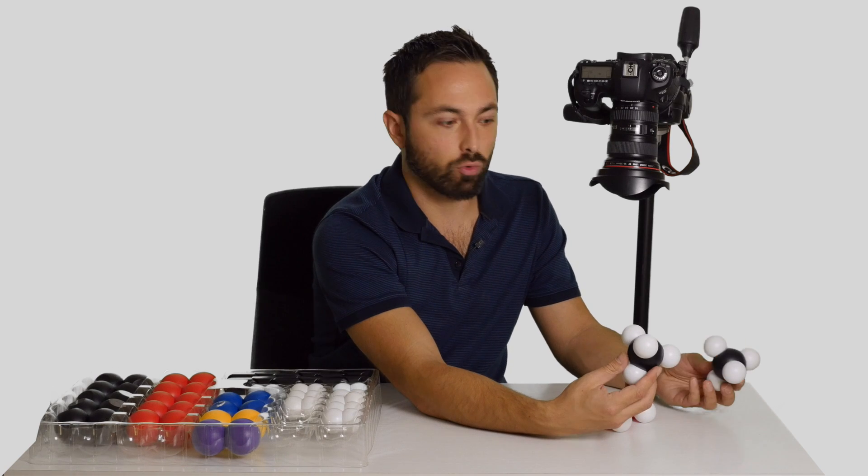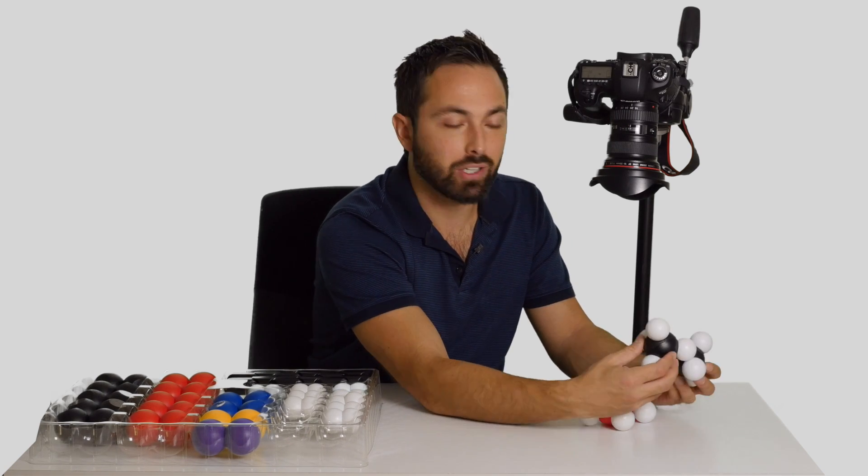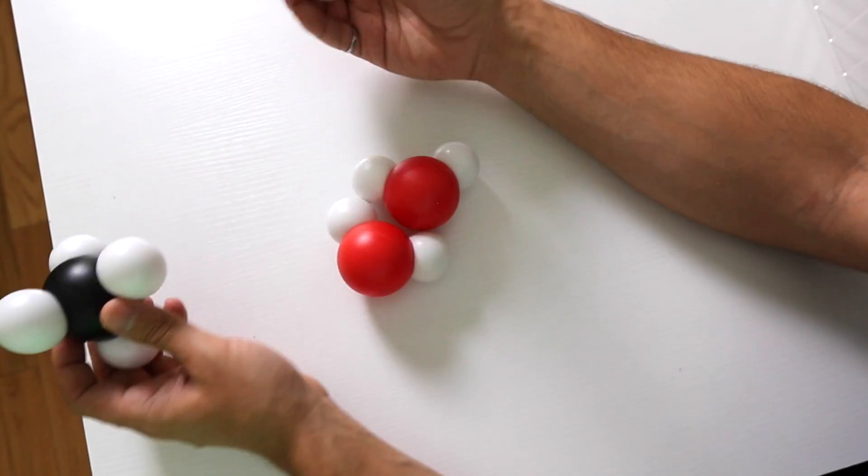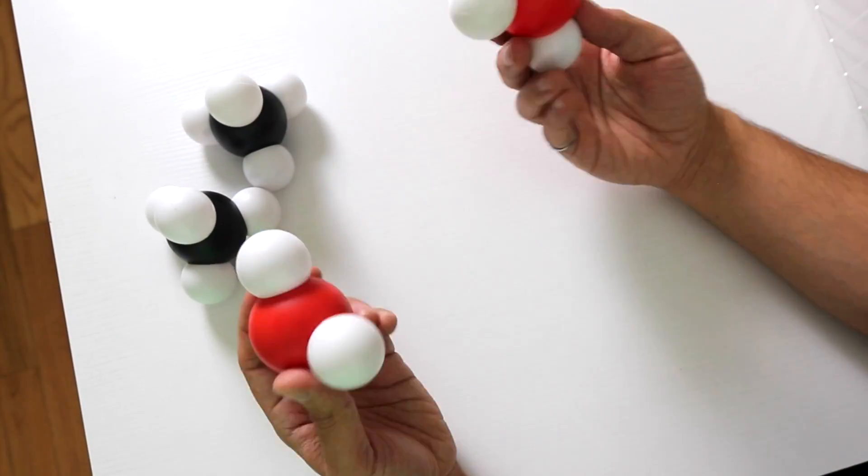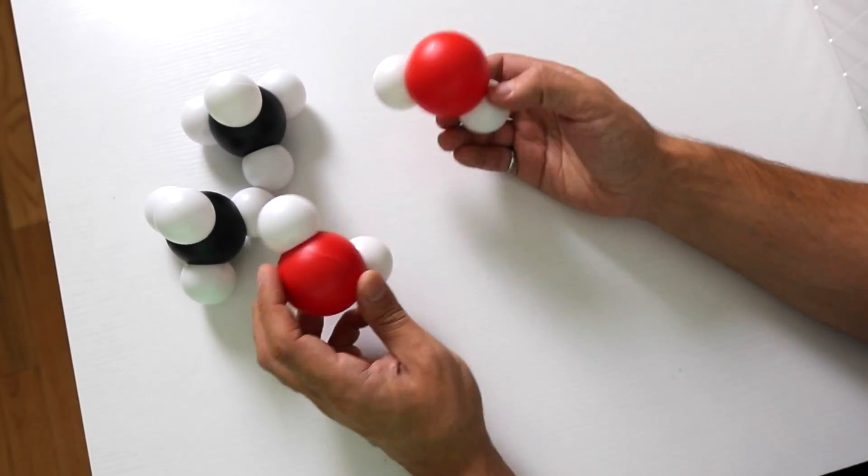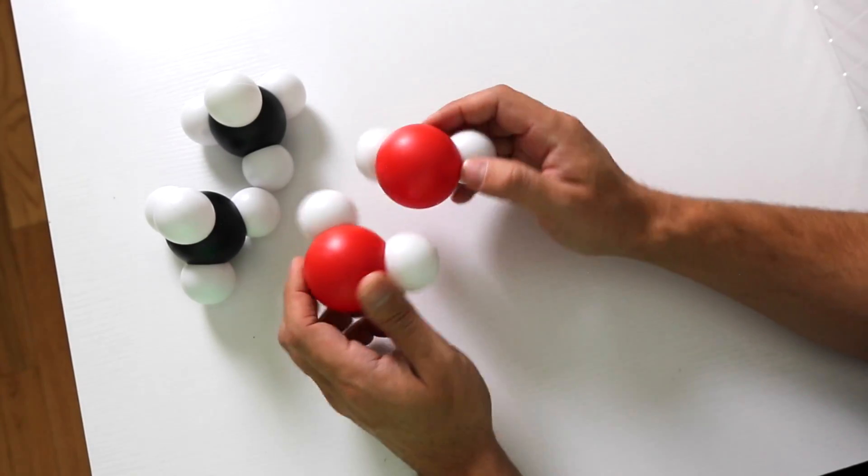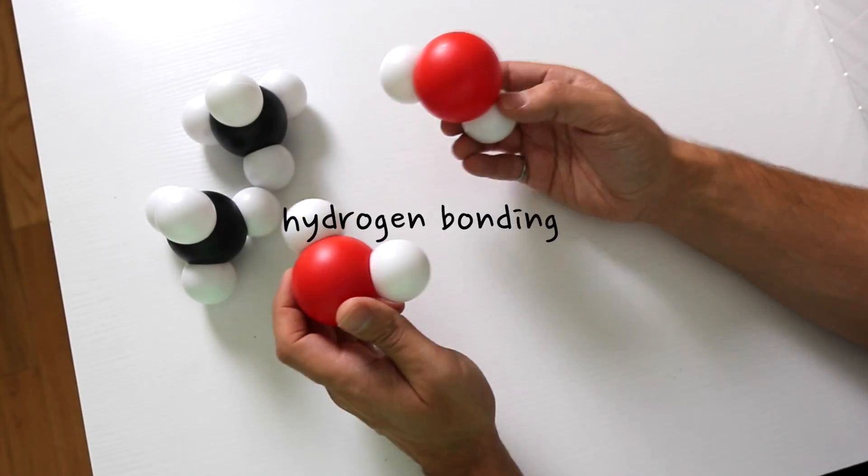Methane will be a gas at room temperature because there's not much attraction between the molecules. They don't really want to stick together. But water is a liquid at room temperature because these molecules are fairly strongly attracted to each other through this so-called hydrogen bonding.